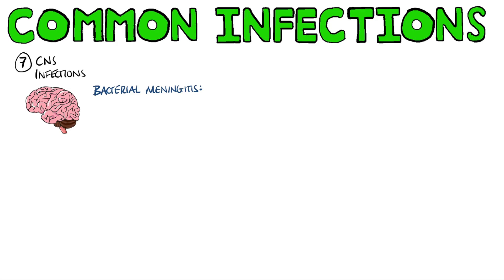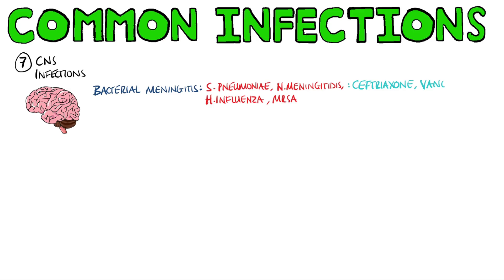Finally, for central nervous system infections — bacterial meningitis is considered a medical emergency. The microbes we're likely to find depend on the patient's situation, but generally we want to cover Strep pneumo, Neisseria meningitidis, Haemophilus influenza, and MRSA if likely. Antibiotics used include ceftriaxone, vancomycin, linezolid, ciprofloxacin, or meropenem.